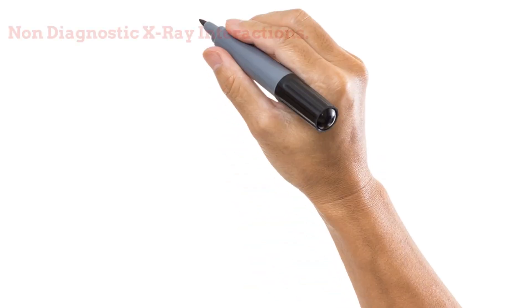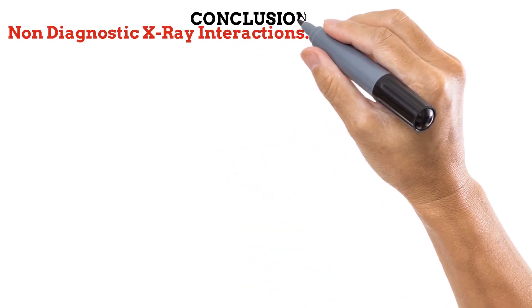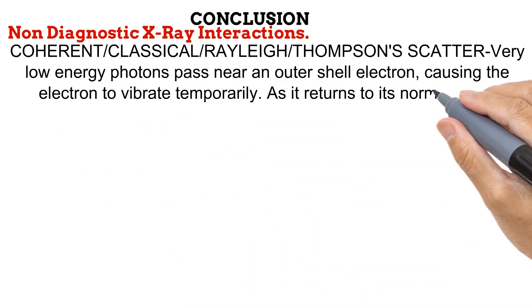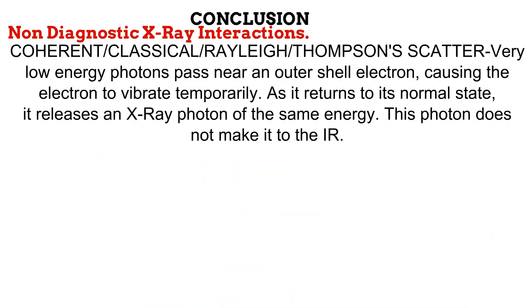Photoelectric effect and Compton scatter are the two common interactions that occur in diagnostic radiography. There are other interactions, but these do not occur at the energy used in diagnostic radiography. First is Coherent Scatter, also known as classical Rayleigh-Thomson scatter. In this type of interaction, the incoming photon has an extremely low energy. When it gets to the anatomy, it only passes near an outer shell electron — it doesn't eject it, it only causes it to vibrate for a short while.